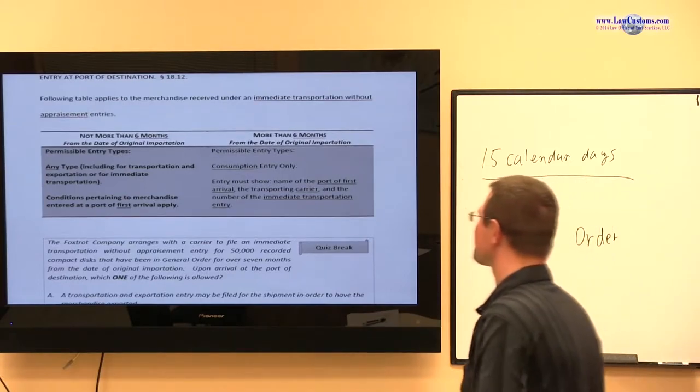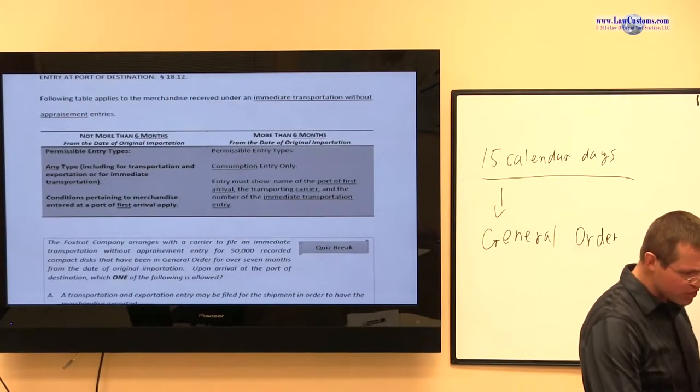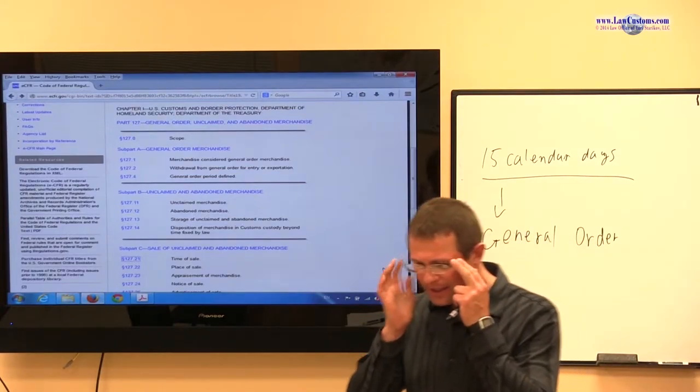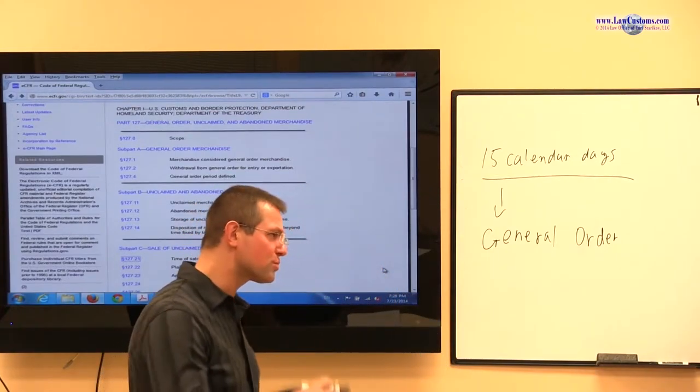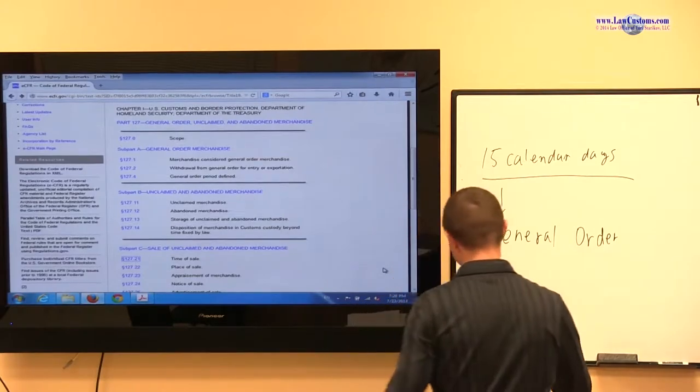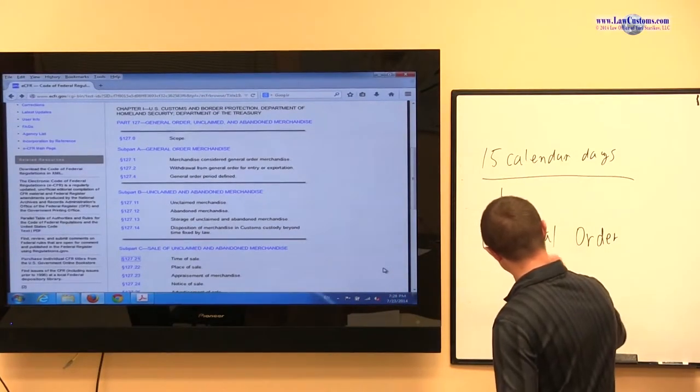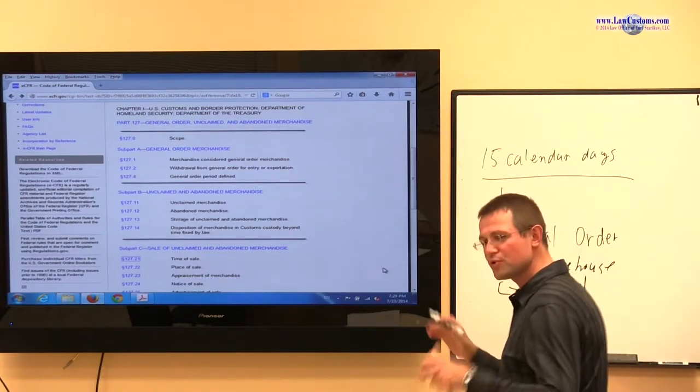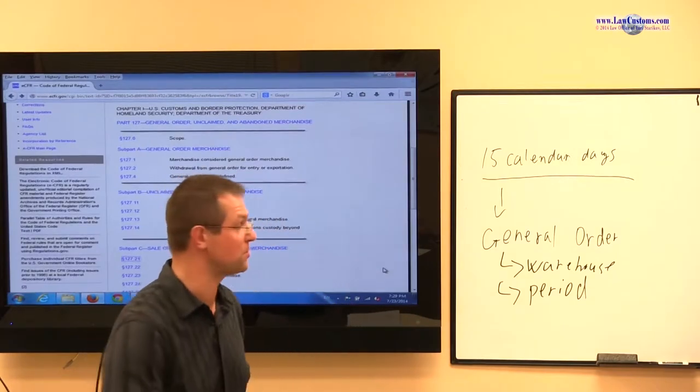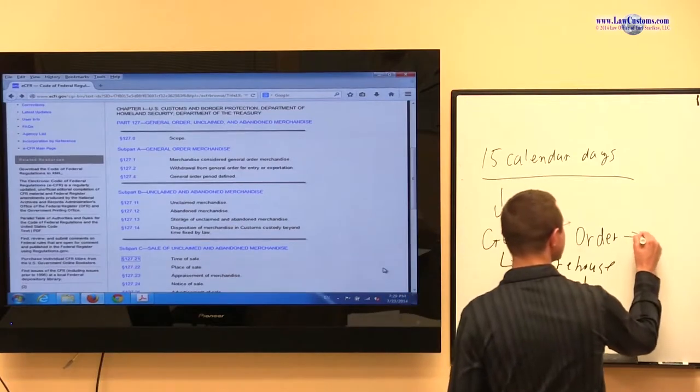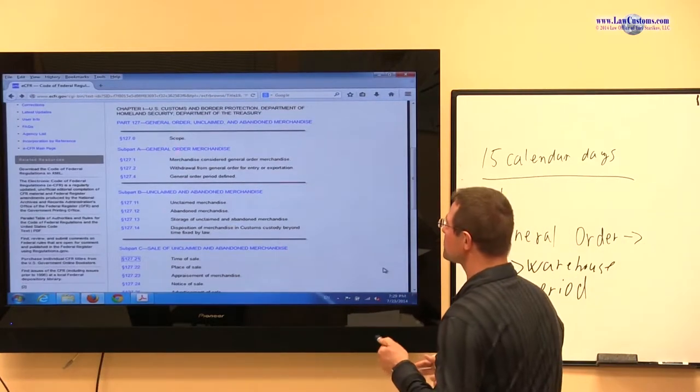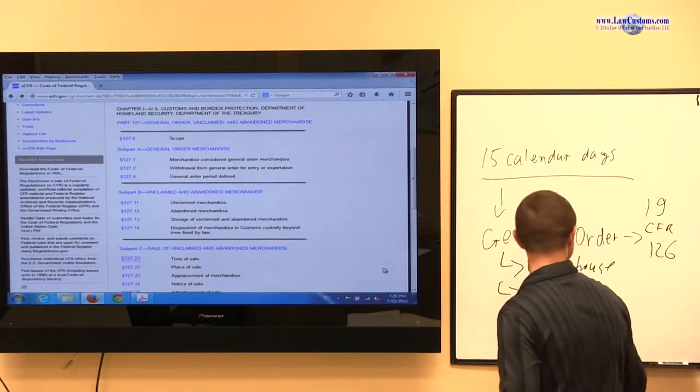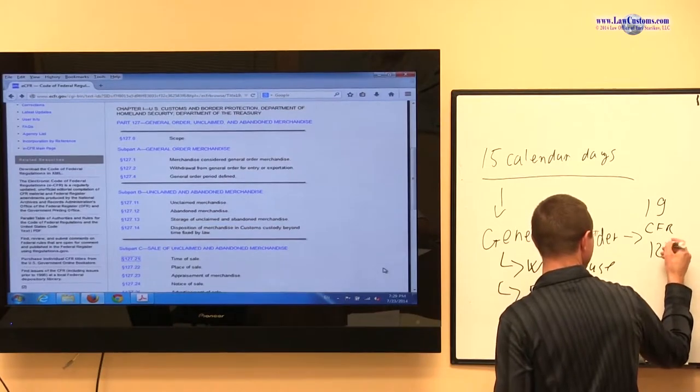The cost of getting it out from general order, the administrative burden is going to be usually higher. So just try to stick within those 15 days if you can, by all possible means. But things happen and merchandise does not get entered within 15 calendar days. It doesn't get entered, it goes into the general order. And it stays in the general order. Now let's talk about general order a little bit. What's general order? General order is a warehouse, right?